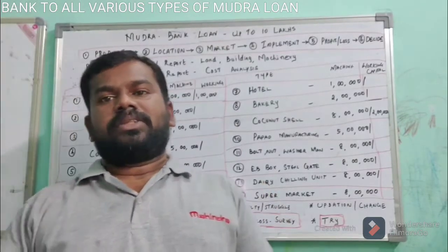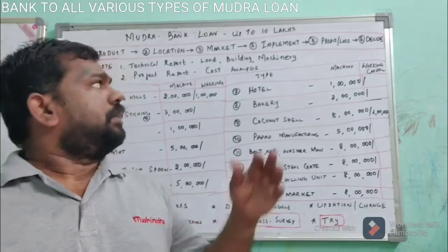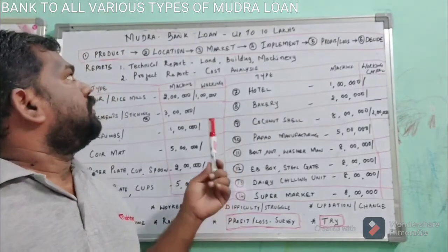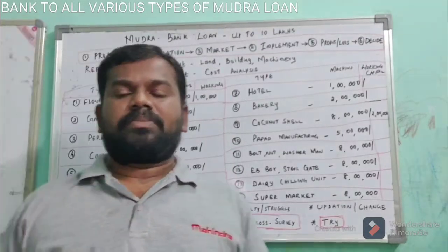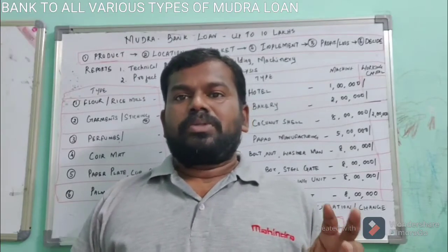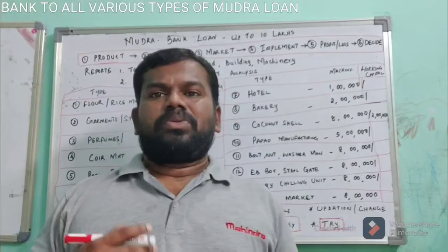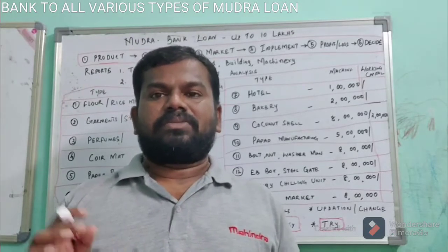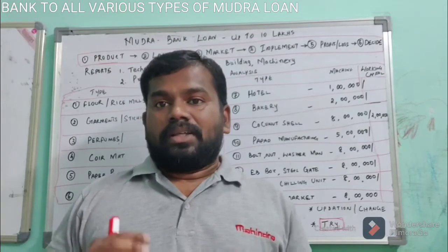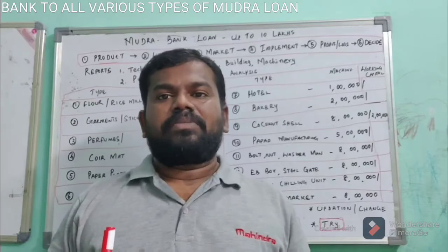Good morning everybody. Today we are going to see some businesses we can do. The loan amount which is less than 10 lakhs comes under Mudra loan, so we can apply for that. To give this type of loan, you have to be choosy in selecting the business. If you go to a bank, they will ask first which business you want to do, what are the machine costs, what is your project cost — you must have this idea in yourself.